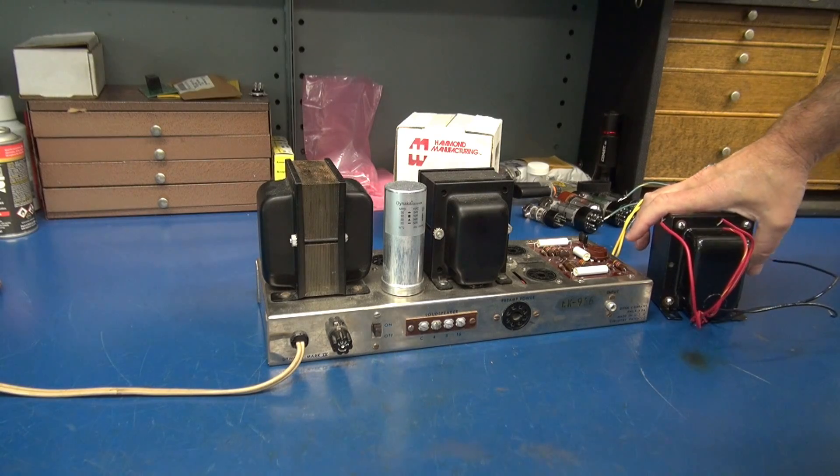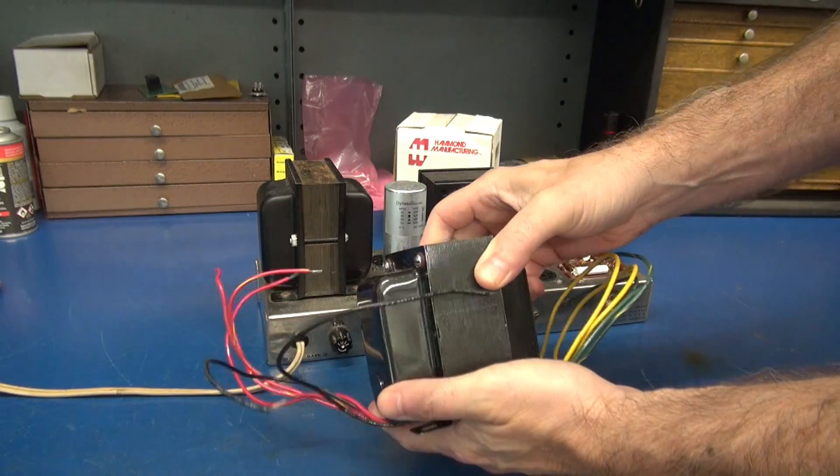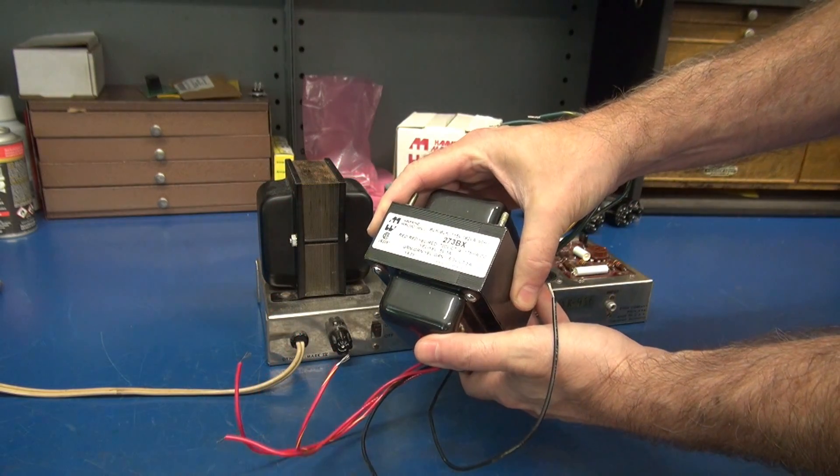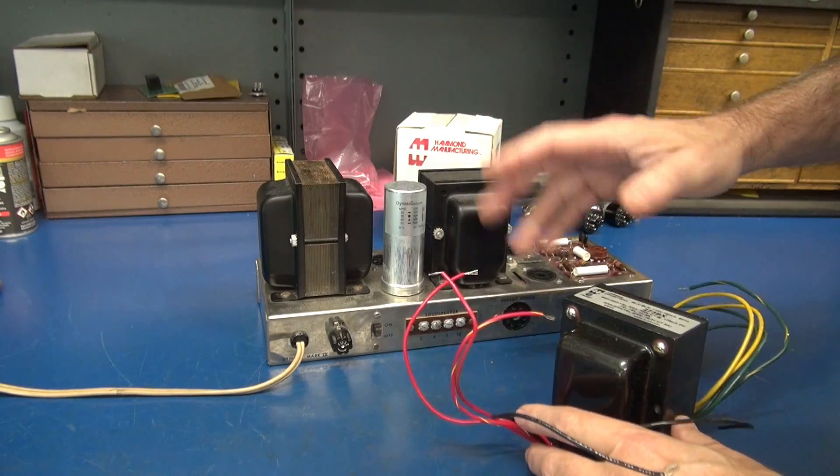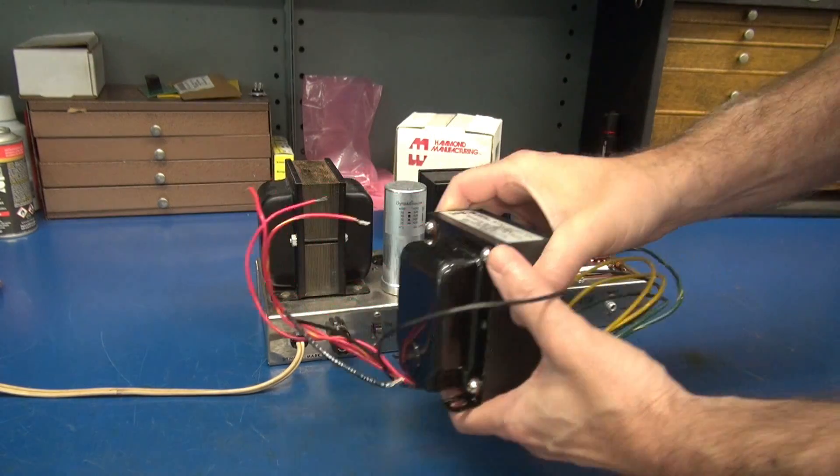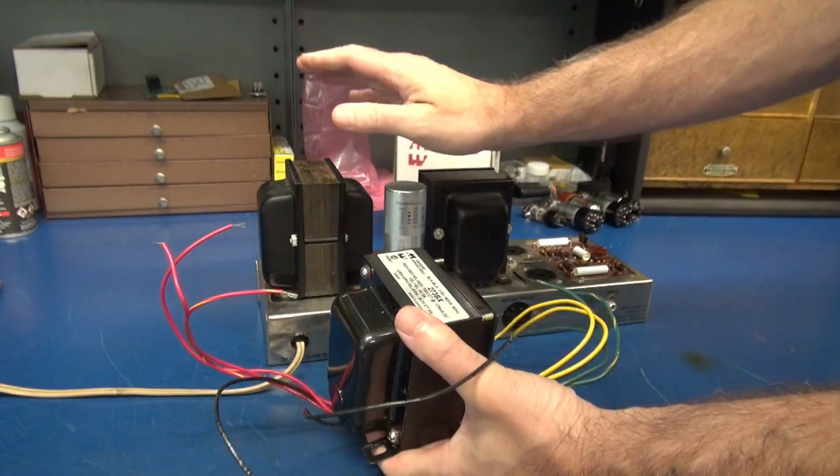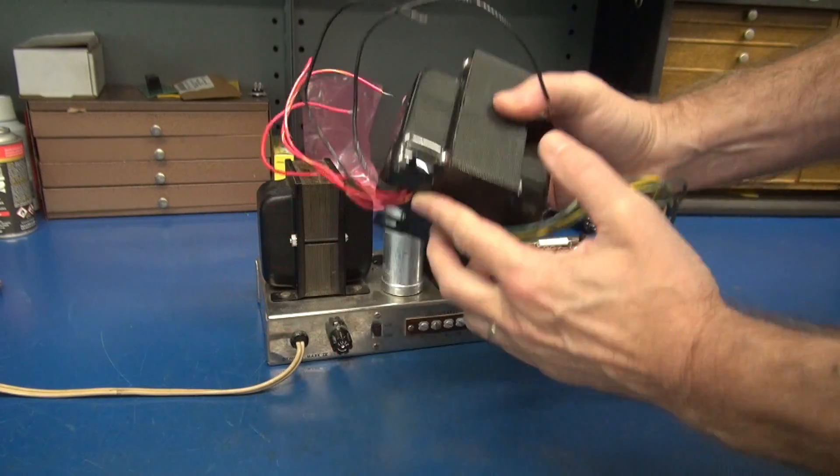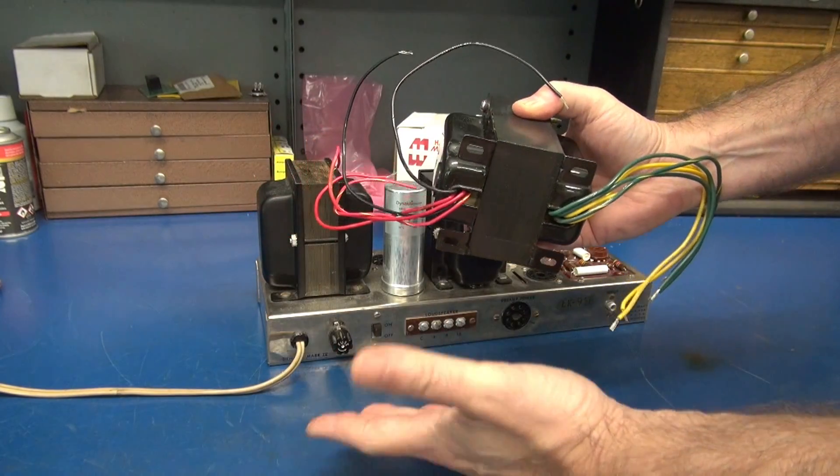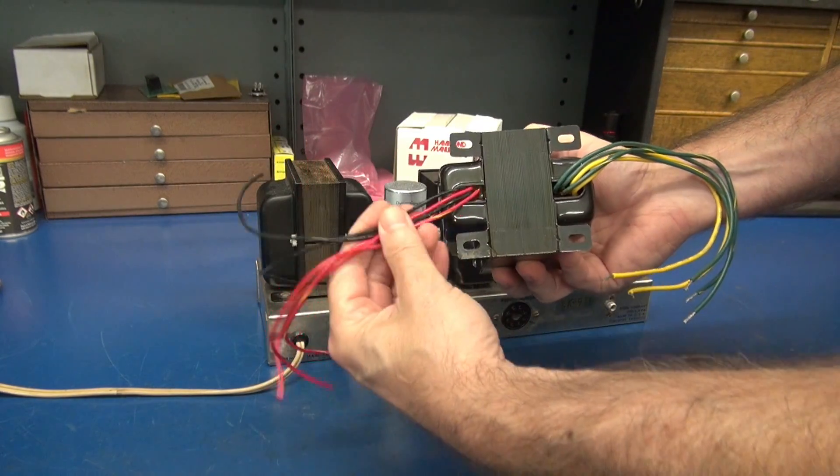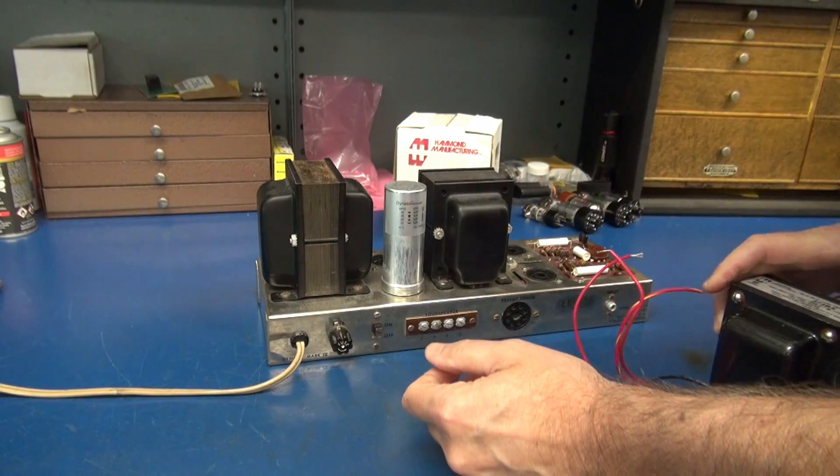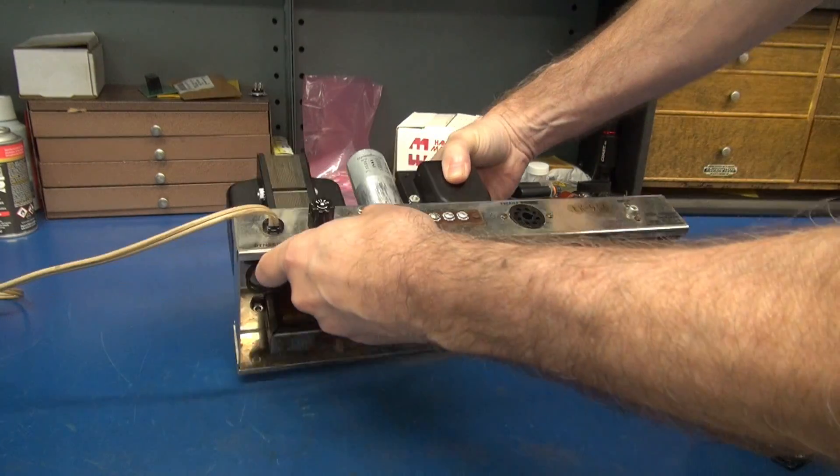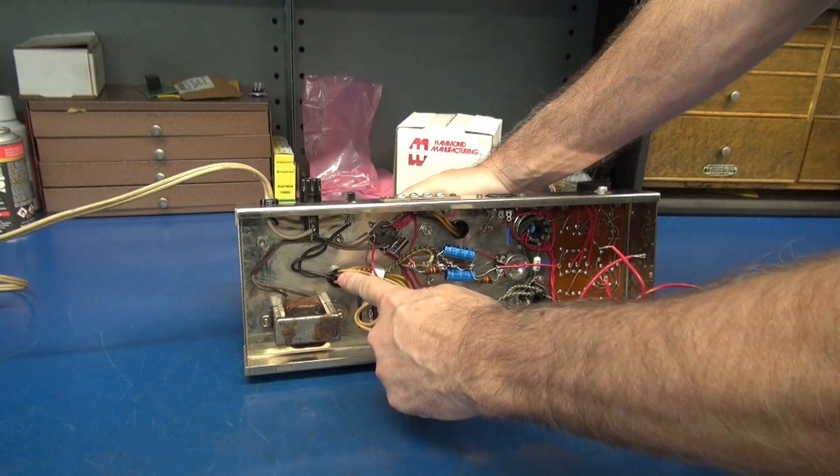Okay, the first step of the update is to mount the new Hammond 273BX power transformer in the place of the old original. Good thing is this transformer is identical size-wise to this transformer so the bolt hole pattern lines right up. The only difference is you have wires exiting both bell ends whereas on the Dyneco it's all coming out of one.